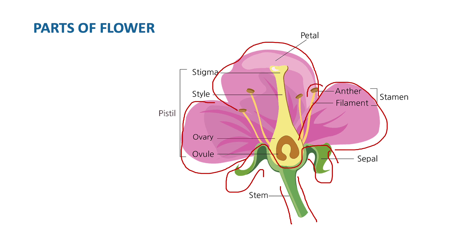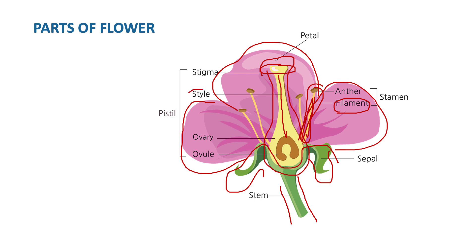Stamen has further two parts. The upper top knob-like part is called the anther, and the stick attached to this knob is called the filament. Right in the middle, a pitcher-shaped structure is there which is called the pistil. Pistil has further three parts. The upper knob-like head part is the stigma, the long neck-like part is the style, and the last swollen part is called the ovary. Inside the ovary, there are round egg-shaped structures called the ovules or eggs.